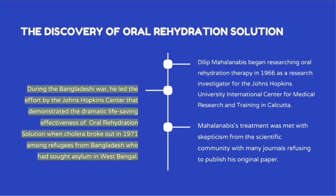During the Bangladeshi War, Mahalanabis led the effort by the Johns Hopkins Center that demonstrated the dramatic life-saving effectiveness of oral rehydration solution when cholera broke out in 1971 among refugees from Bangladesh who had sought asylum in West Bengal.